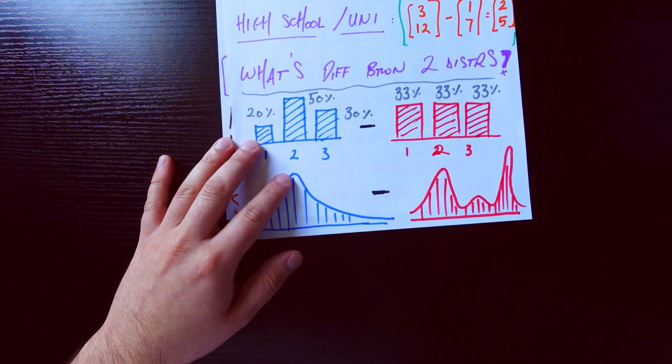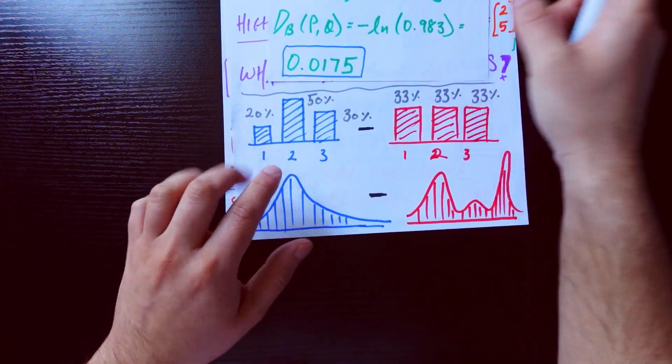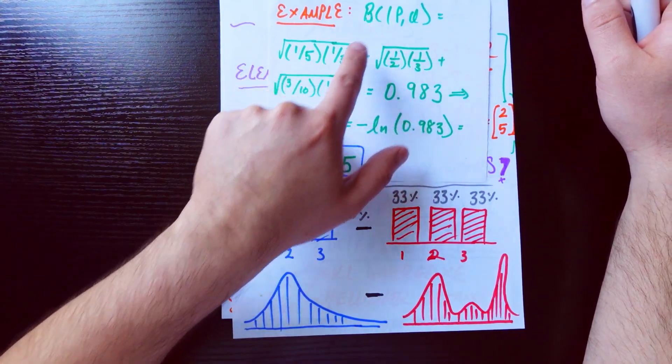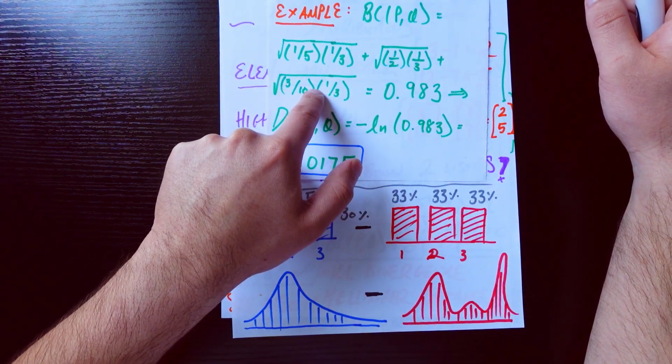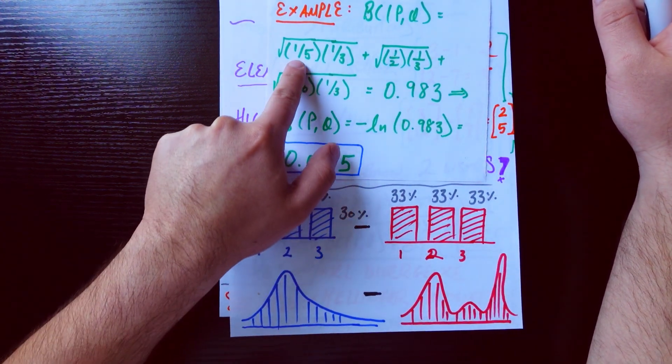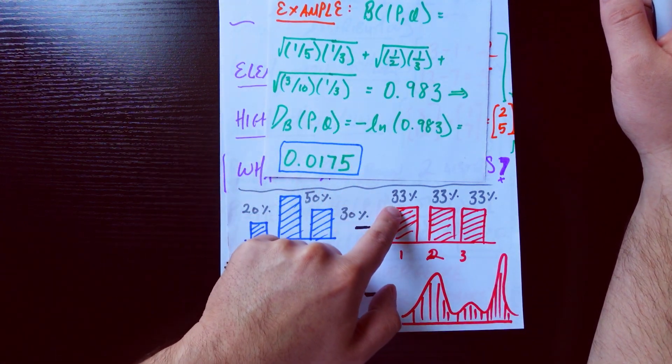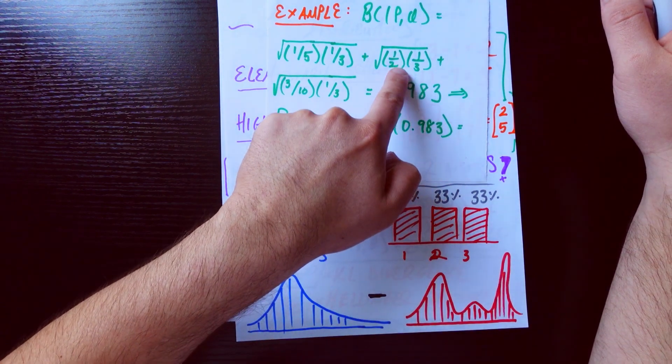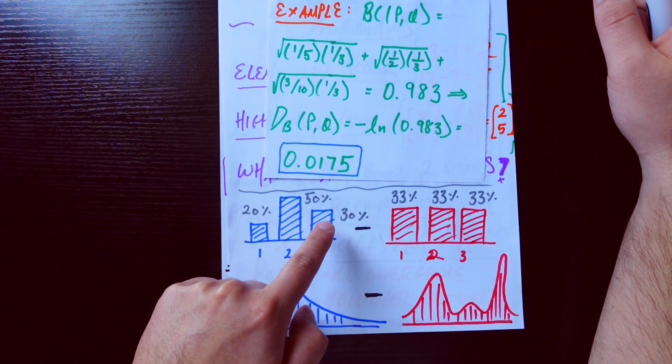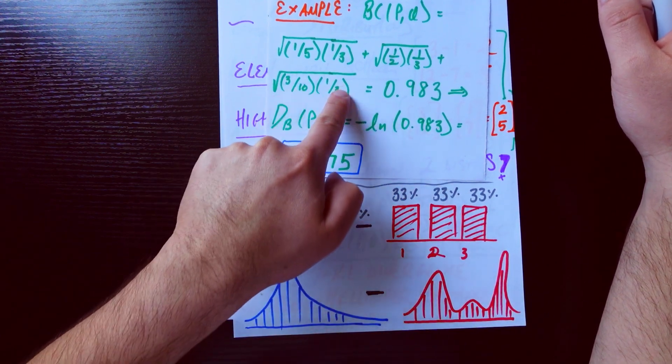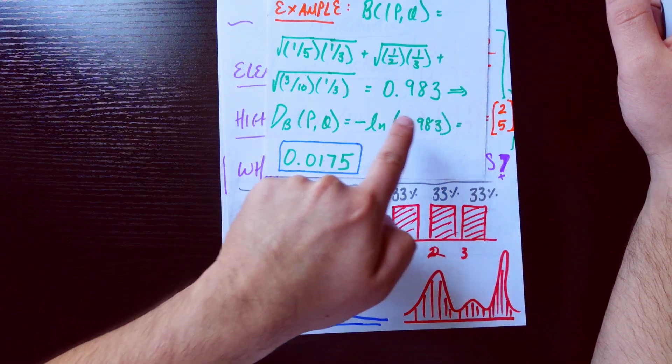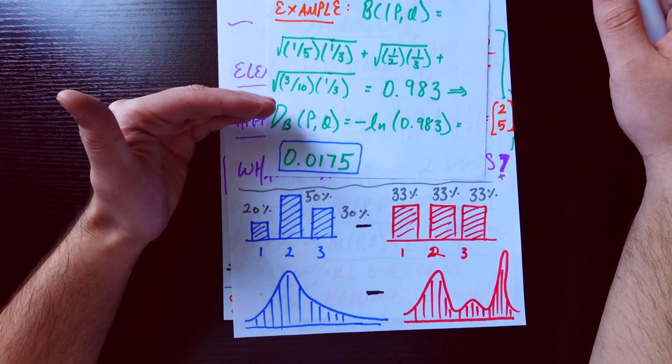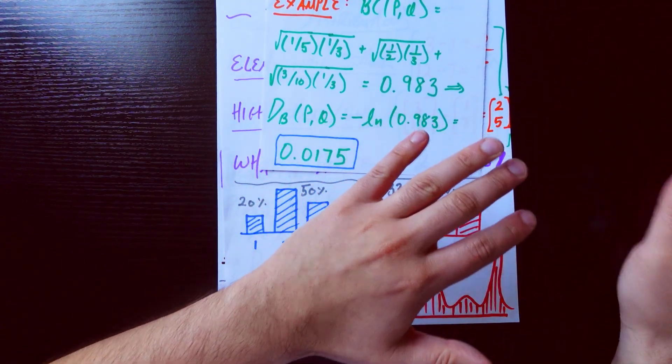But in the rest of this video, let's just go through some numeric examples. Namely, we'll be going through the same example here that we wrote. So how would we calculate that? First, we calculate this BC coefficient. It's going to be the sum of these three square roots. The first one's going to be 0.2 or one-fifth times 0.33 or one-third. The next one's going to be one-half times one-third—that's just what you see here. And the last one is going to be one-third, or sorry, three over ten times one-third. Three over ten times one-third. That comes out to 0.983.